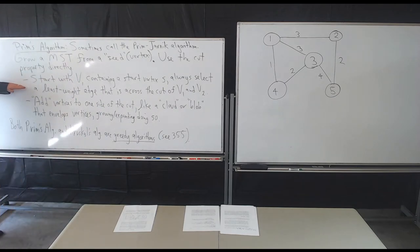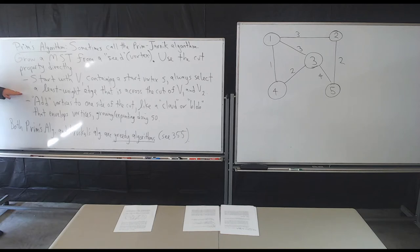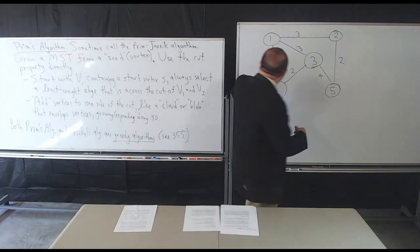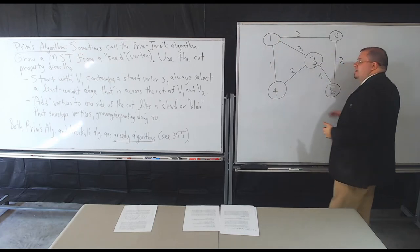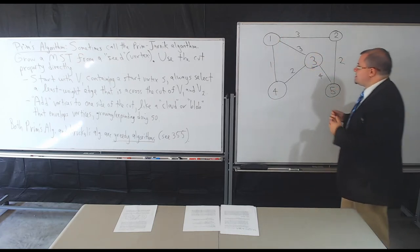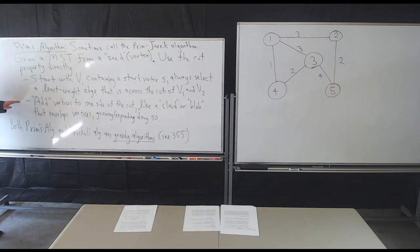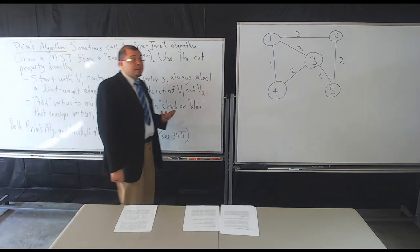We're going to start off with V1 containing the starting vertex. What we'll do is pick a least weight edge that crosses the cut from V1 to V2. As we do this, we're going to add vertices to one side of the cut. If I started at 4, I would add 1 to this side of the cut, then consider edges that span across the cut and pick the next least weight edge.